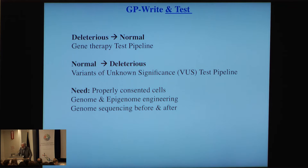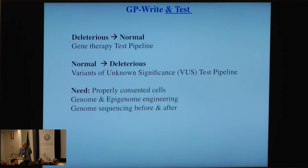For this we need properly consented cells, and we turn to the Personal Genome Project for those — Jason Bobe will talk about that. We have genome and epigenome engineering, and for the read-write-test cycle, the testing needs to access almost any kind of cell or organ in the human body without actually making a human being. Sequencing is also really important — it's hard to edit or write a genome if you've never read one.